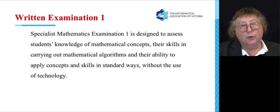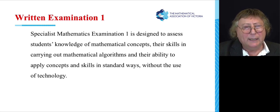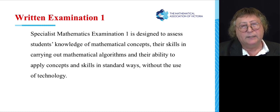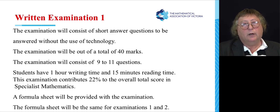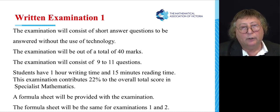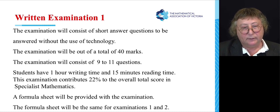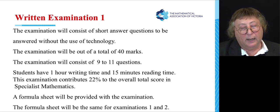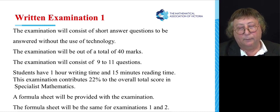Specialist Maths exam one is designed to assess your skills of typical mathematical concepts without the use of technology. In other words, exam one, you are not allowed to use your calculator because you're not allowed to bring it in. So typically exam one questions you may have seen in textbooks. There won't be too many surprises, but you should expect some different questions along the way. But most of them will be questions that you may have seen and done before. So basically exam one is to be done without the use of technology. Generally exam one is worth a total of 40 marks. It will consist of nine to eleven questions. You have one hour writing time, 15 minutes reading time to do this exam. And this exam contributes 22% to your overall score in Specialist Maths. The formula sheet is provided and is to be used, and you also get the formula sheet in exam one and exam two as well.